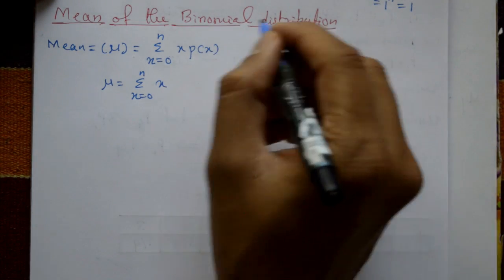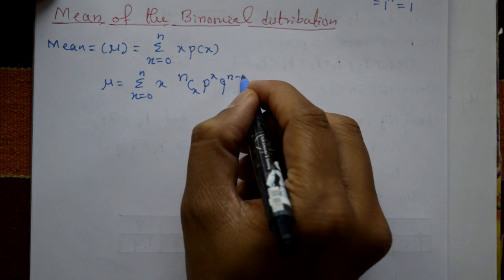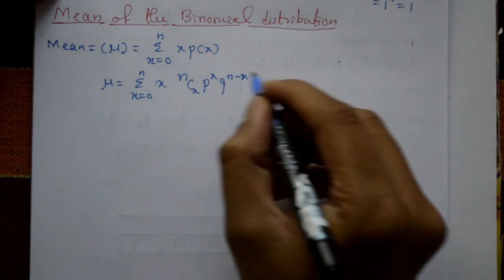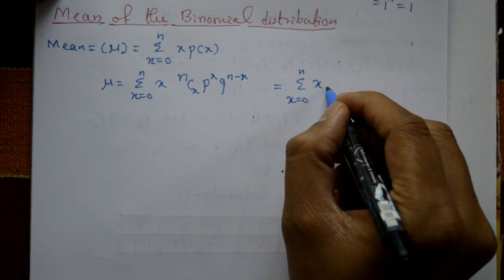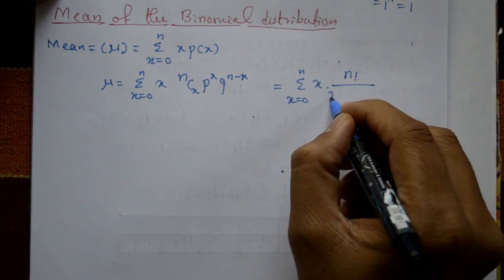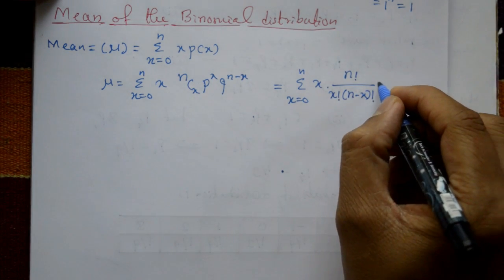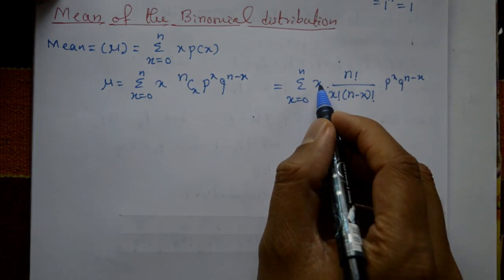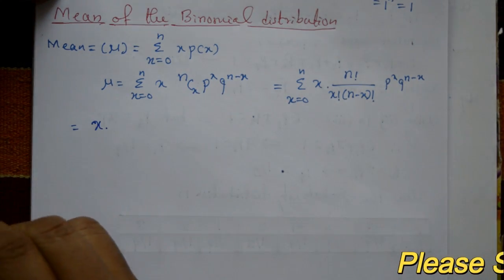Here p(x) is the binomial distribution: n C x, p raised to x, q raised to n minus x. So mu equals summation x equals 0 to n of x into n factorial divided by x factorial into n minus x factorial, into p raised to x into q raised to n minus x.